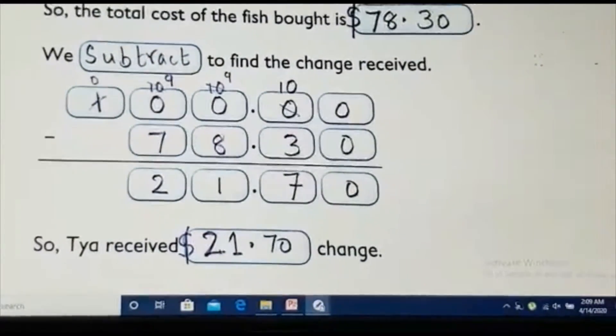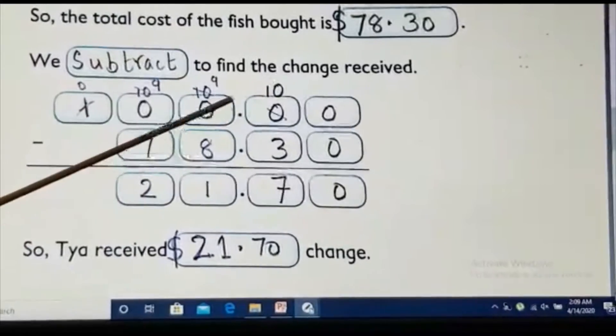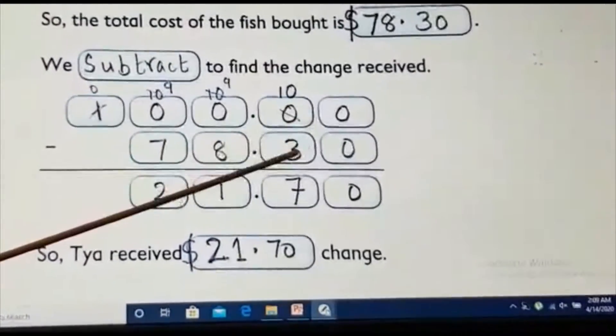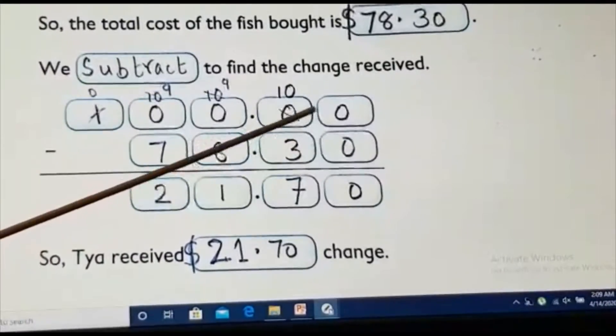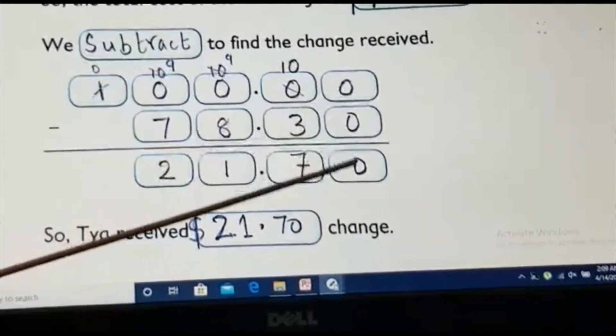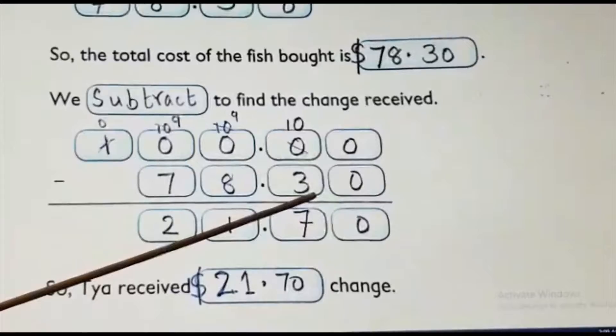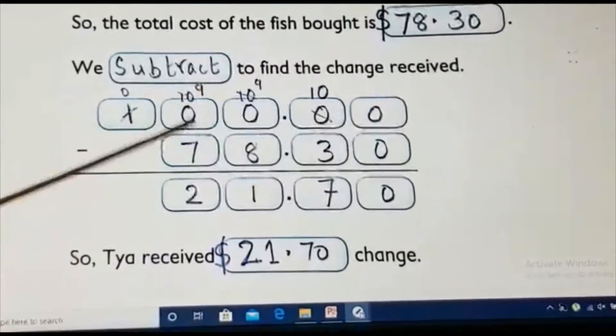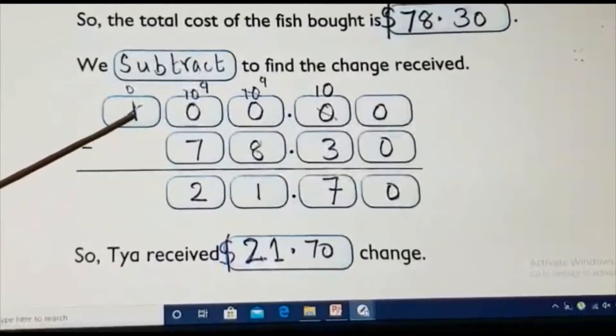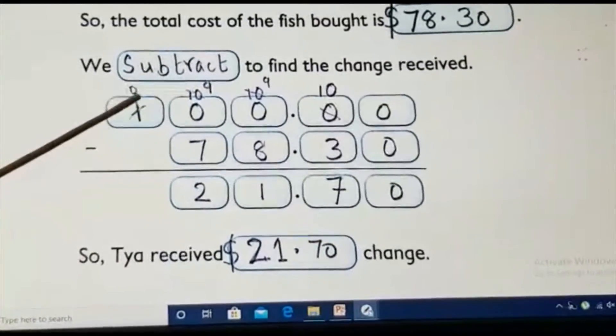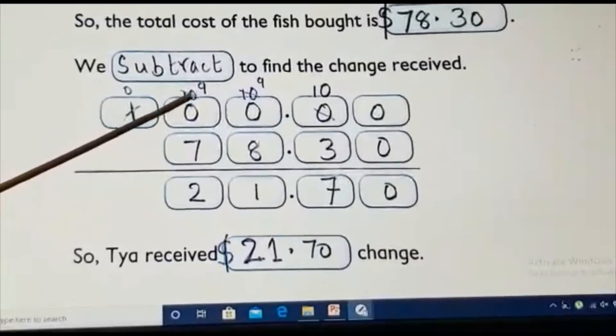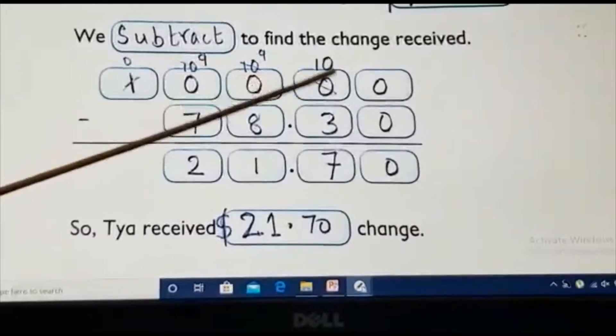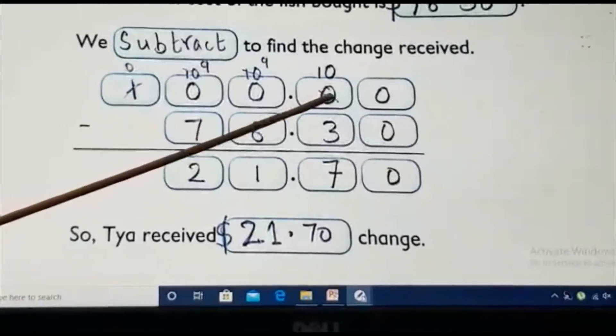100 minus 78.30. Here, we are making like decimal first because here, nothing is there. We need to subtract this. Here also we put 0, 0. 0 minus 0 is 0. 0 minus 3, can you do? We cannot do. We will take here also 0. I cannot take from here. Here also, I cannot. I will come here. From here, I will take 1 to here. This becomes 0. This 0 becomes 10. Again, I am taking 1 from that. It becomes 9. When it comes here, it becomes 10. Again, I am taking 1. It becomes 9. Here it is 10.